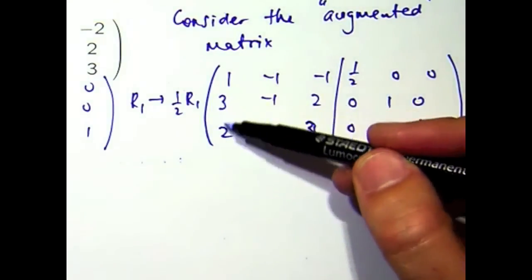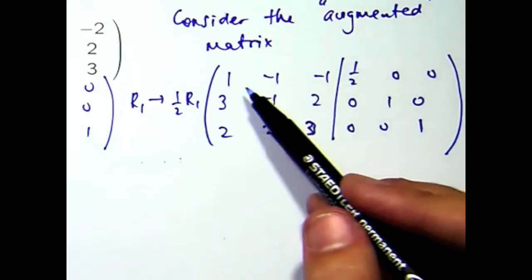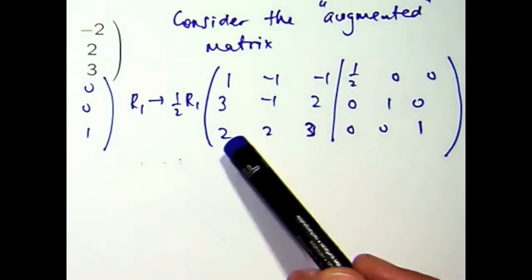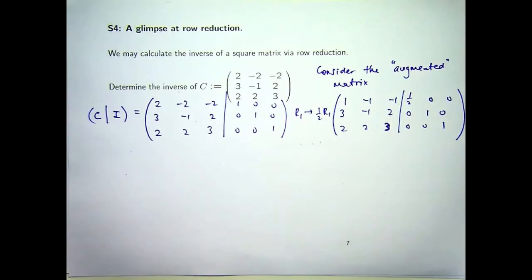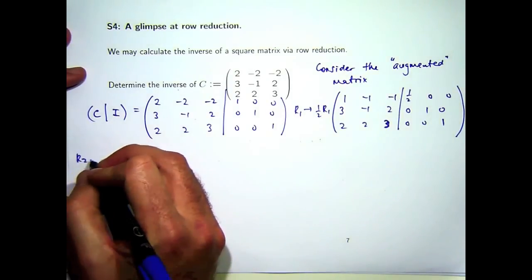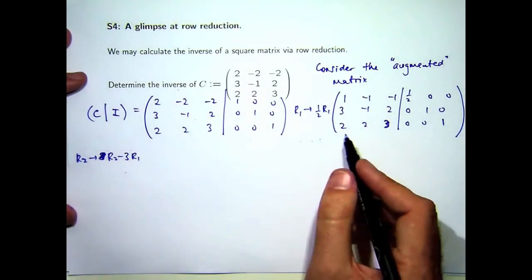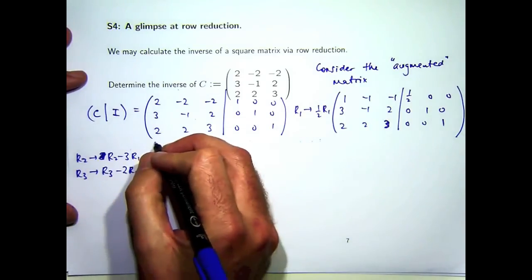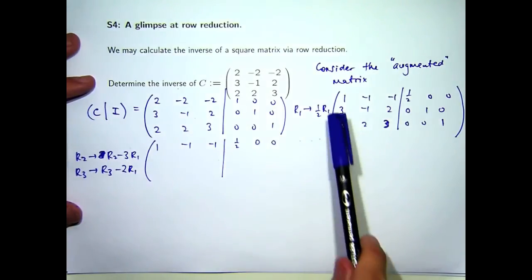Now I've got that one, what I would like to do is make all the entries below it in the same column zeros. So how can I get that three to a zero? Well I can take three lots of the first row away from the second row, and the two down here can be made into a zero just by taking two lots of the first row away from the third row. So that's row 2 minus 3 row 1, and for this one I'm going to take away two times row 1.